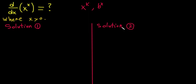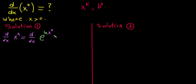I want to solve this in two ways. The first and easiest way is to use the natural logarithm. We write d/dx of x^x, and rewrite it using the identity e^(ln(x^x)). Since e and ln cancel each other, e^(ln(x^x)) equals x^x — that's why we can use this form.